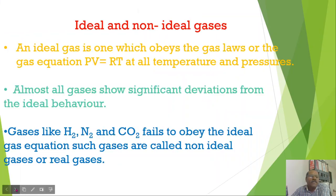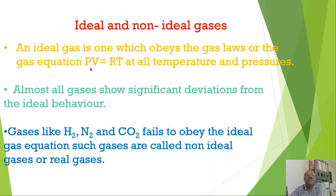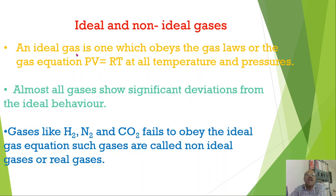First of all, what is meant by ideal and non-ideal gases? An ideal gas is one which obeys the gas laws or the gas equation PV = RT at all temperatures and pressures. Almost all gases show significant deviations from ideal behavior. Gases like hydrogen, nitrogen, and carbon dioxide fail to obey the ideal gas equation.